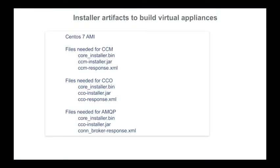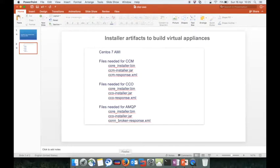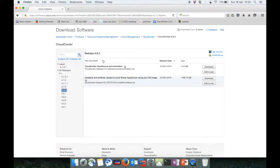These are the files that are actually needed to build your virtual appliances. We'll need the CentOS AMI image that you can get from Amazon Marketplace. There are other files needed for installation of Cisco Cloud Center listed here. For CCM, we would need the core installer.bin, as well as the JAR files and the XML files. Similarly, for CCO we would need certain files, and so does for the AMQP. These files can be downloaded from the Cisco.com software portal. This is for release 4.6.2 - so based on the release that you want to install, you download the installer and artifacts, extract the files into a repository from where you can fetch those files and build your custom AMIs.